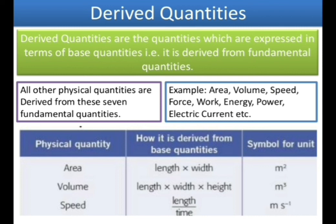Here is a table showing some derived quantities: area, volume, and speed. Area equals length into width, expressed in meter squared. Volume is length into width into height, so the unit is meter cubed, since length, width, and height are all measured in meters. Speed equals distance divided by time; distance is measured in meter and time in second, so the unit of speed becomes meter per second.